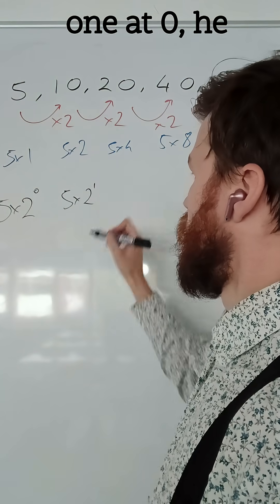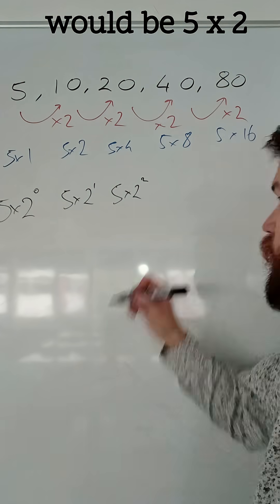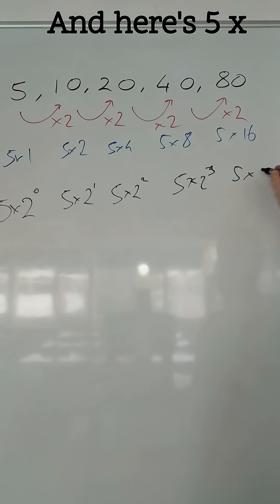Here would be 5 times 2 to the 1. Here would be 5 times 2 squared. Here would be 5 times 2 to the cubed. And here's 5 times 2 to the 4.